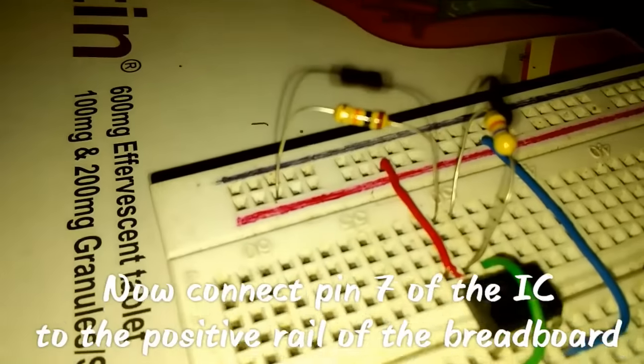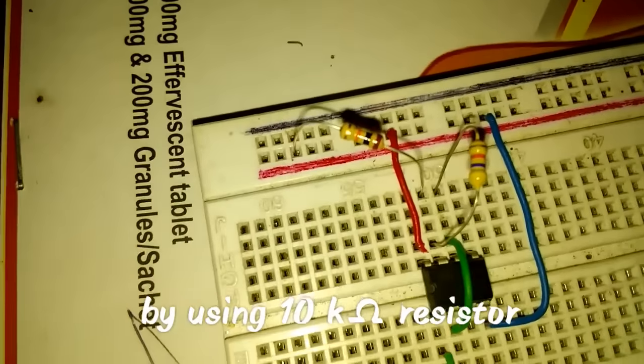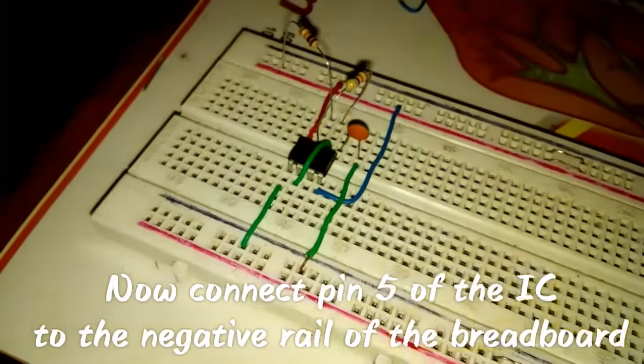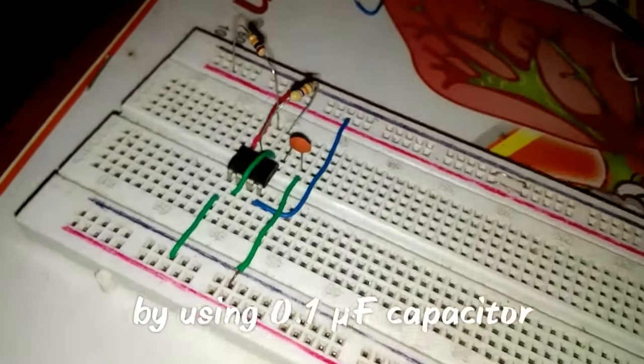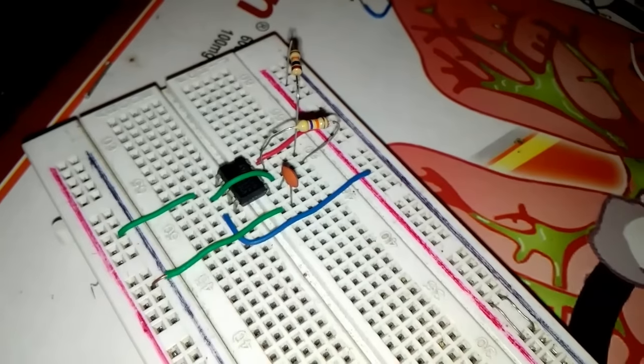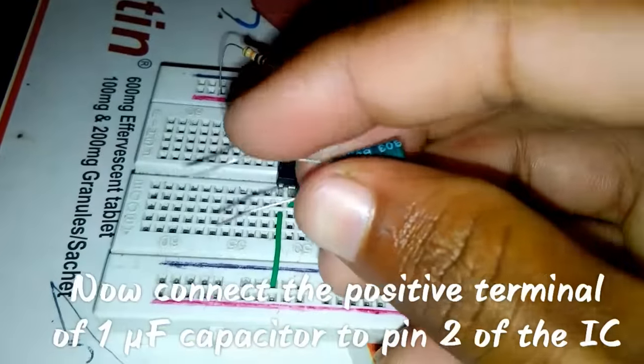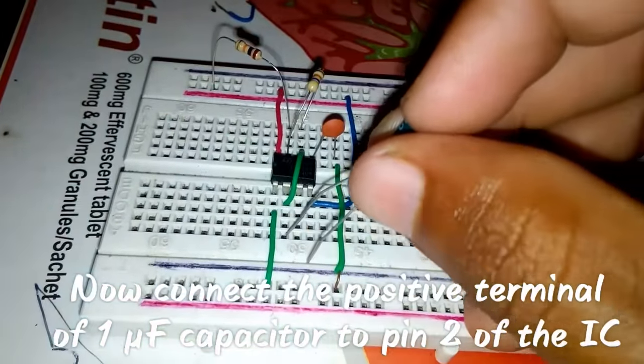Now connect pin 5 of the IC to the negative rail of the breadboard by using the 0.1 UF capacitor. Now connect the positive terminal of the 1 UF capacitor to pin 2 of the IC and the negative terminal to the negative rail of the breadboard.